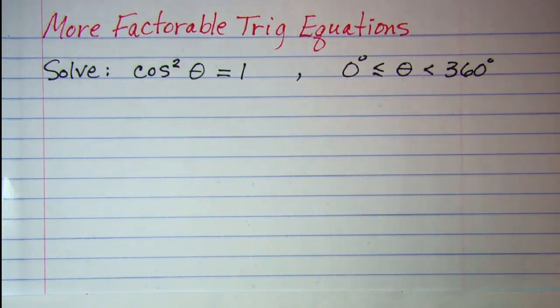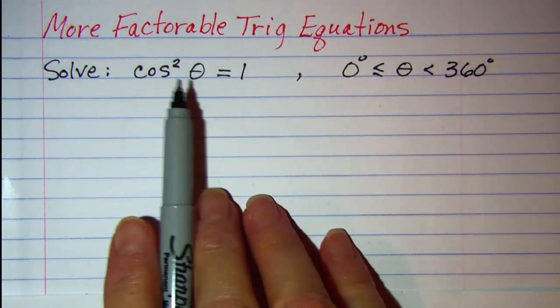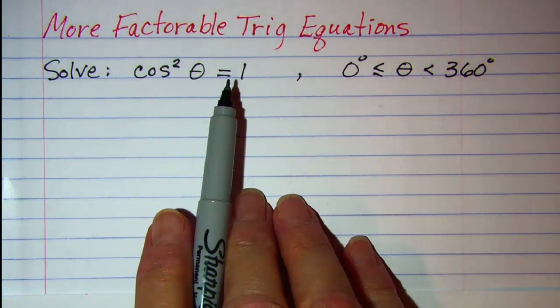In this video we'll be solving some more factorable trig equations. Our first example we're asked to solve cosine squared theta is equal to 1.